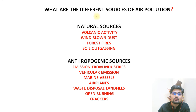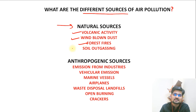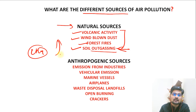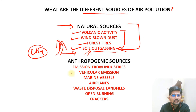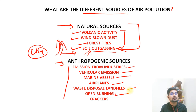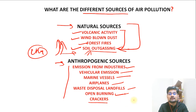The next important point is what are the different sources of air pollution. Natural sources include volcanic activity, wind-blown dust, forest fires, soil outgassing - this outgassing has become more concerning in the Arctic and Antarctic zones where because of global warming there is now CH4, that is methane release, which was earlier hidden. Then anthropogenic sources - this is a huge list: emissions from industries, vehicular emissions, marine vessels, airplanes, waste disposal, landfill sites, open burning where there is garbage disposal, and crackers as well. These are all the sources of air pollution.